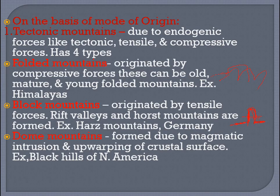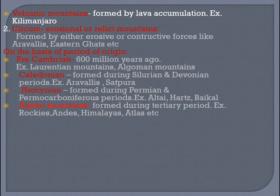Dome mountains are formed due to magmatic intrusion and upwarping of the crustal surface. Example: the Black Hills of North America. They have a dome shape formed when molten magma rises upward, cools down, and solidifies. Volcanic mountains are formed by lava accumulation — example: Mount Kilimanjaro.